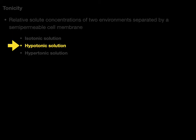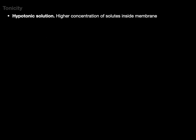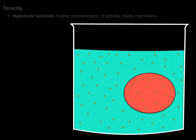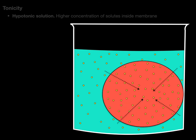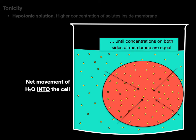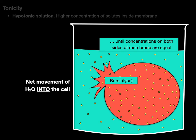Now let's take a look at a hypotonic solution, which is where there's a higher concentration of solutes inside the cellular membrane. We have the same beaker but we increase the concentration of solutes inside the cell, so water flows in towards the saltier side. The net movement of water is into the cell until concentrations on both sides of the membrane are equal, or the cell bursts — we call that lysis.